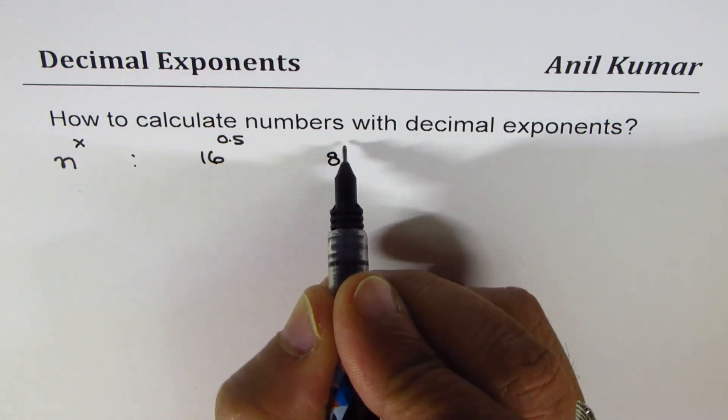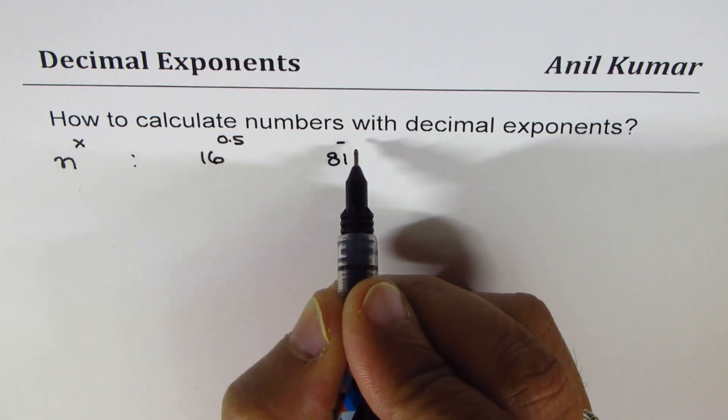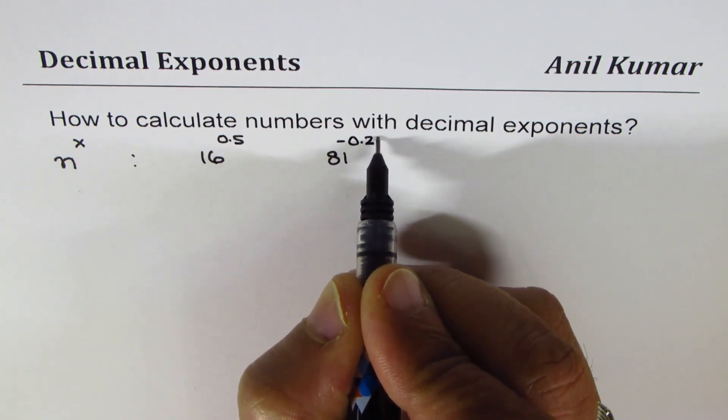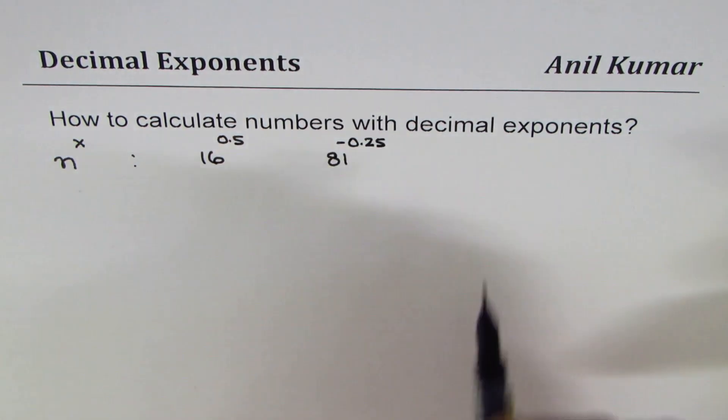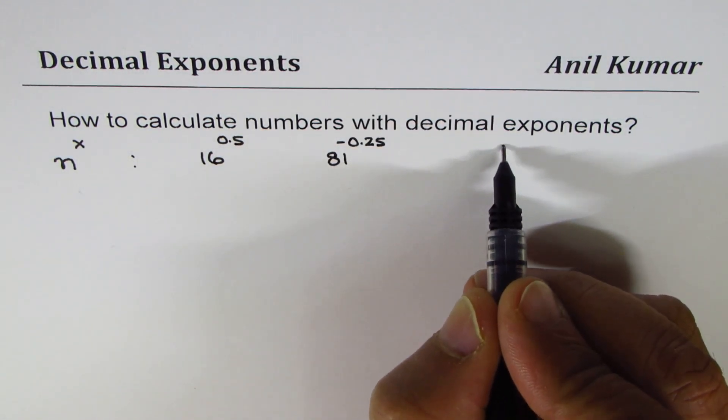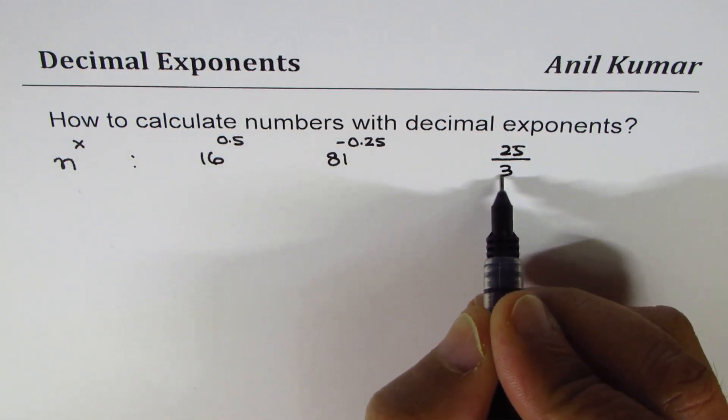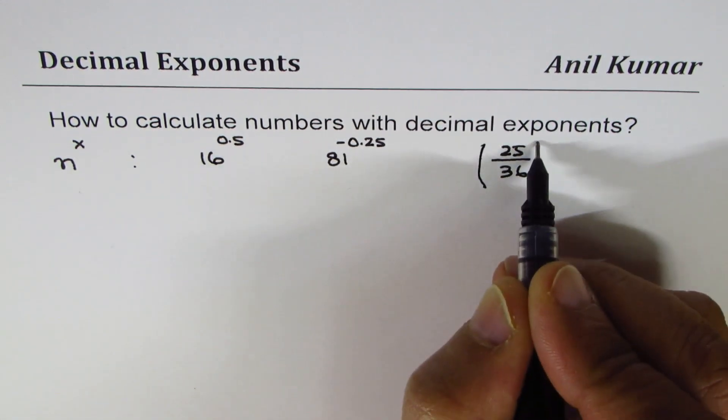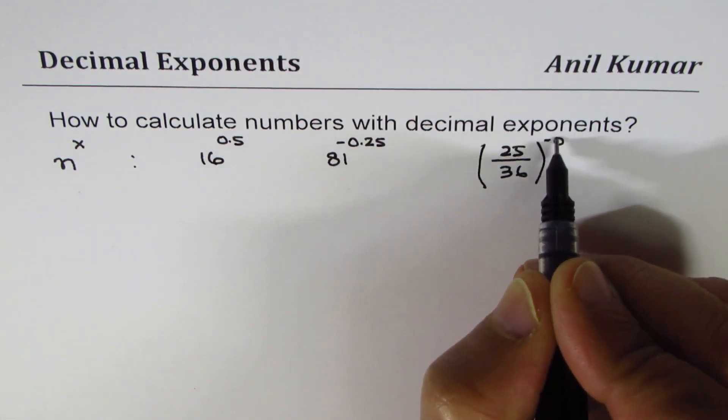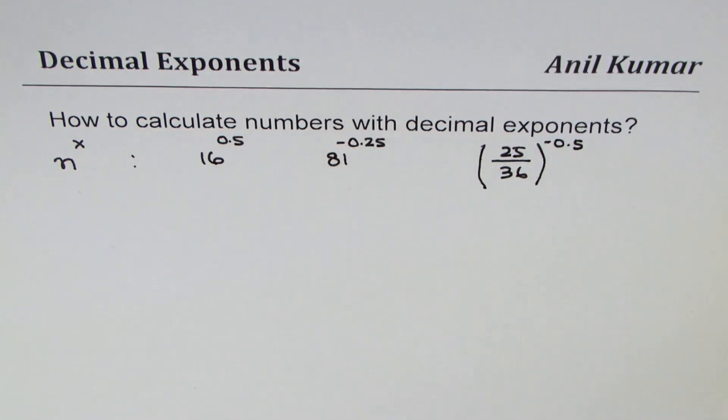We could do something like 25 over 36 to the power of minus 0.5. So we'll take these kinds of examples and then we could have some practice questions.